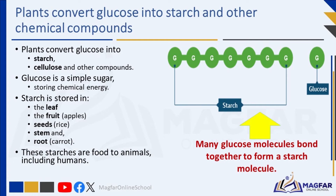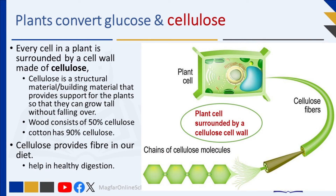Glucose is a simple sugar and the energy stored in it is chemical energy. Many glucose molecules bond together to form a starch molecule — starch is a more complex sugar made of glucose molecules joined together. Starch molecules are stored in the leaf and other parts of the plant such as the fruit, seeds, stem, and roots. These starches are food to animals, including humans, providing them with energy. Glucose is also converted to cellulose; every cell in a plant is surrounded by a cell wall made of cellulose, which provides structural support so plants can grow tall.